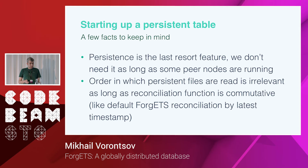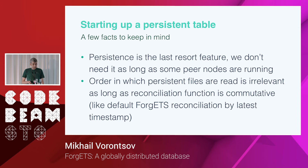Persistent tables are actually a last-resort feature — you only need them when all nodes in the island went down. If at least one node is running, you can reconcile from it and restart all peers. An interesting fact about Vargets is that the order in which persistent files are read is absolutely irrelevant, as long as the reconciliation function is commutative. The default Vargets reconciliation function — latest timestamp wins — is commutative.